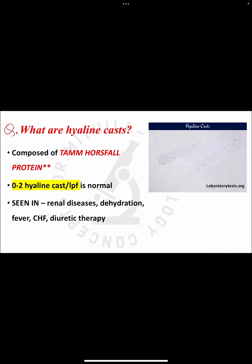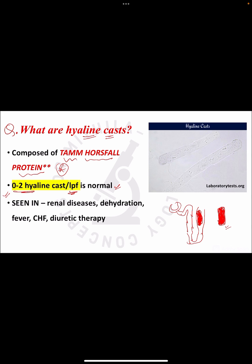The next question is: what are hyaline casts? Hyaline casts are mucoproteins secreted by the renal tubules. When these proteins come into the tubules, they assume a cylindrical shape, which is why casts are cylindrical. The normal count for hyaline casts is 0 to 2 per low power field. These mucoproteins are also known as Tamm-Horsfall proteins — an important name to remember.